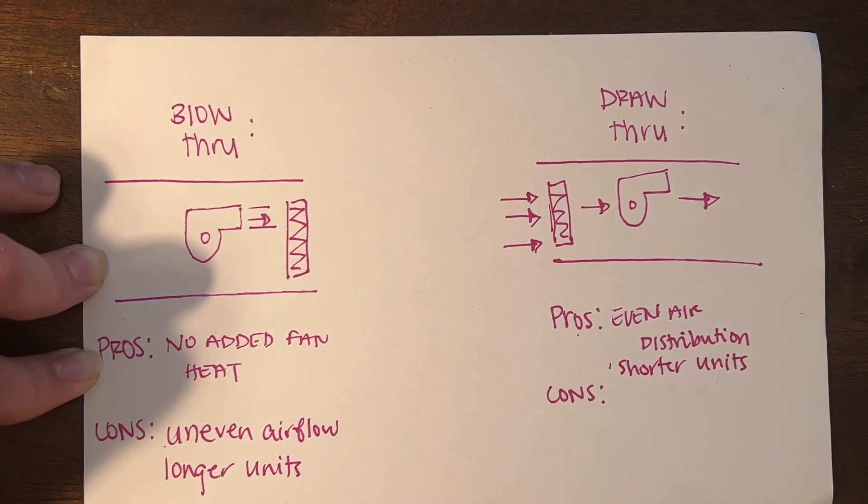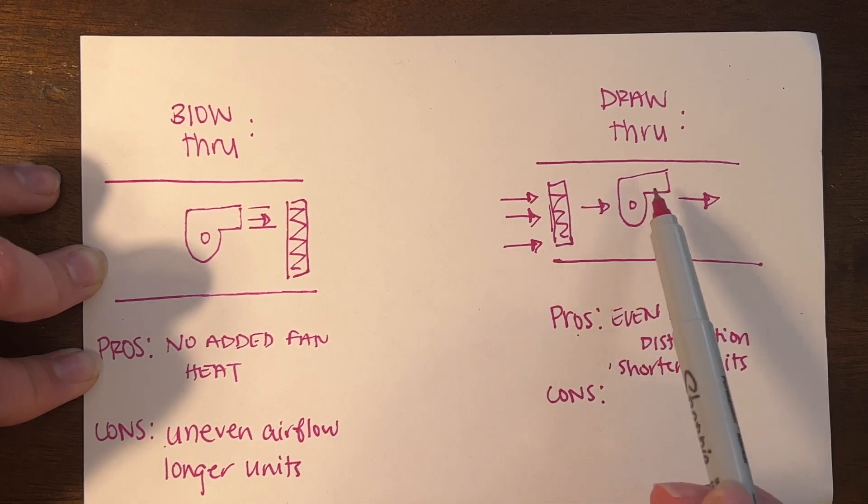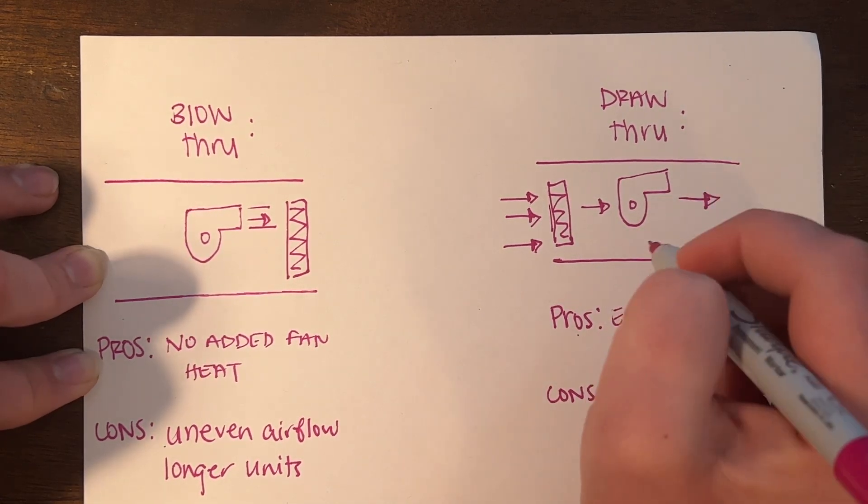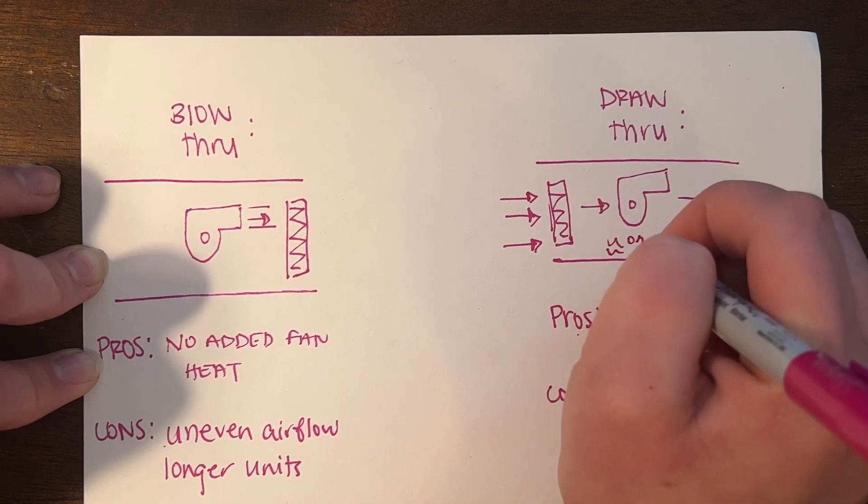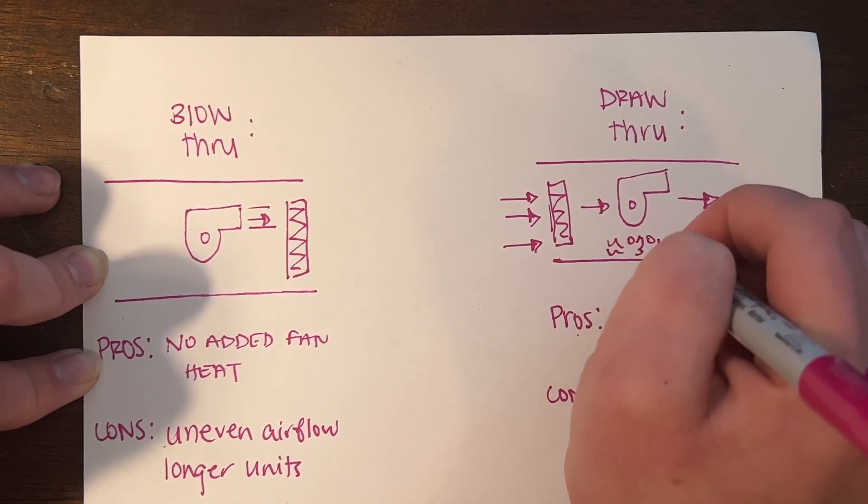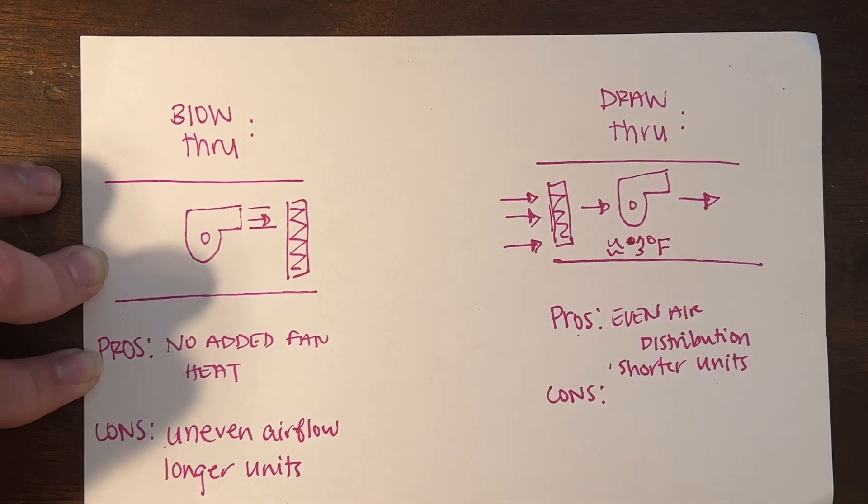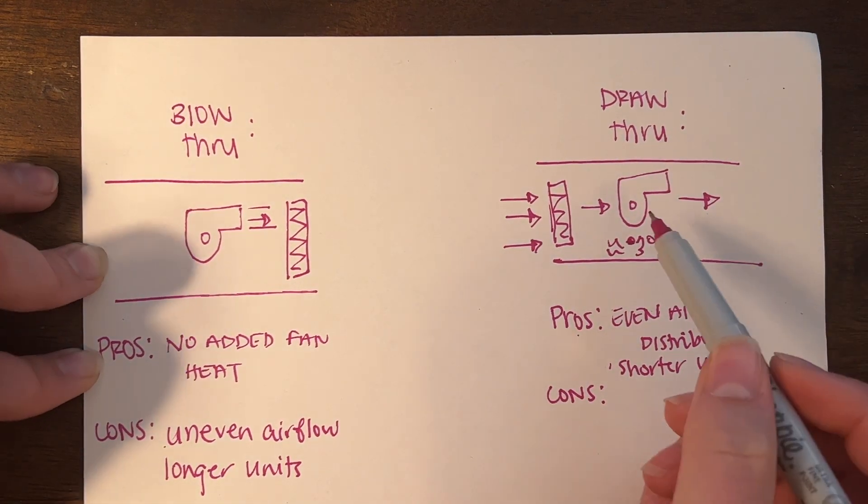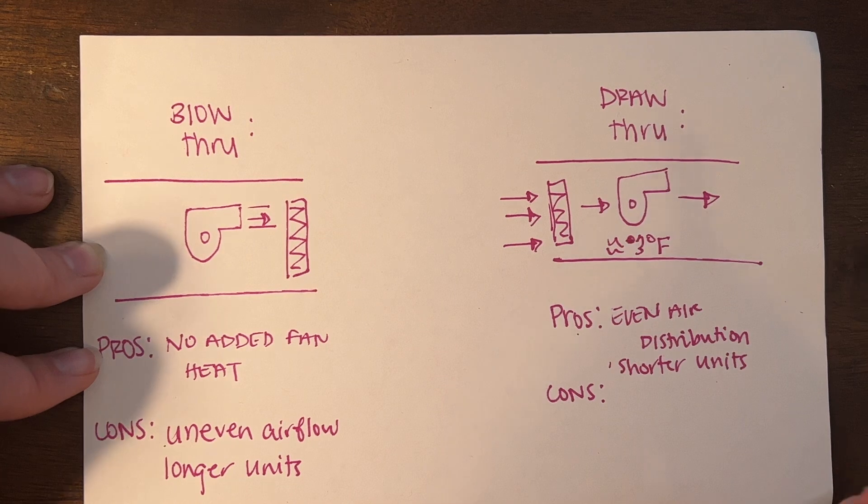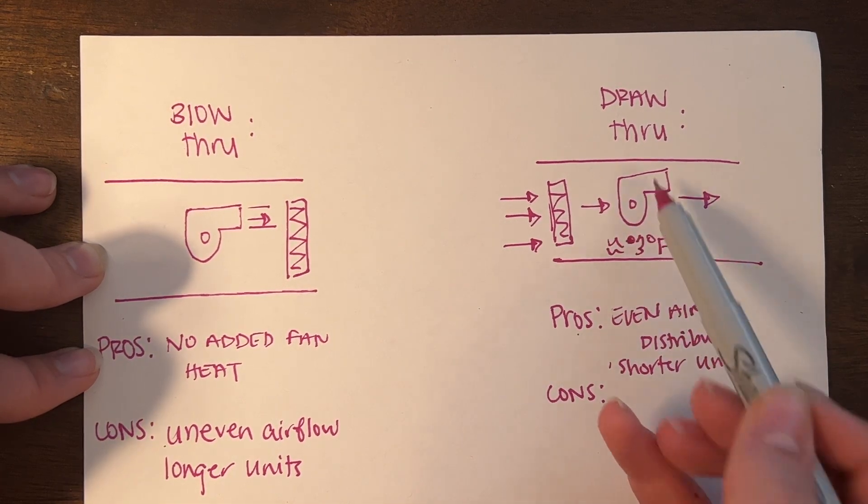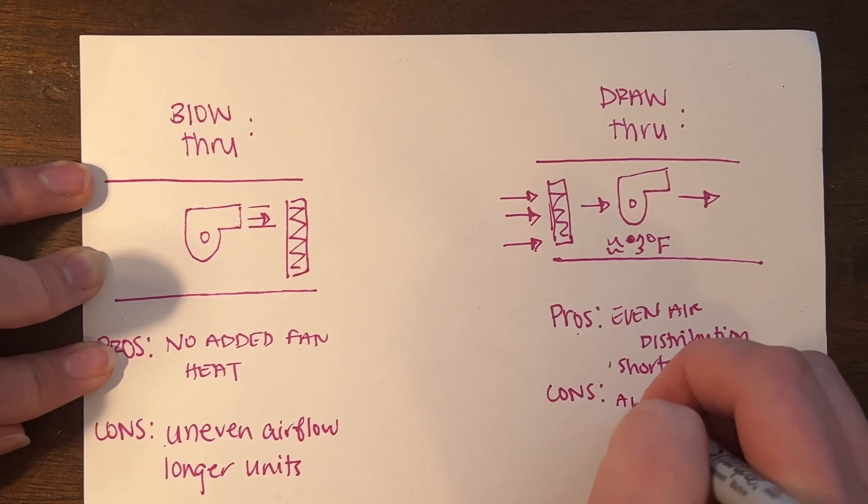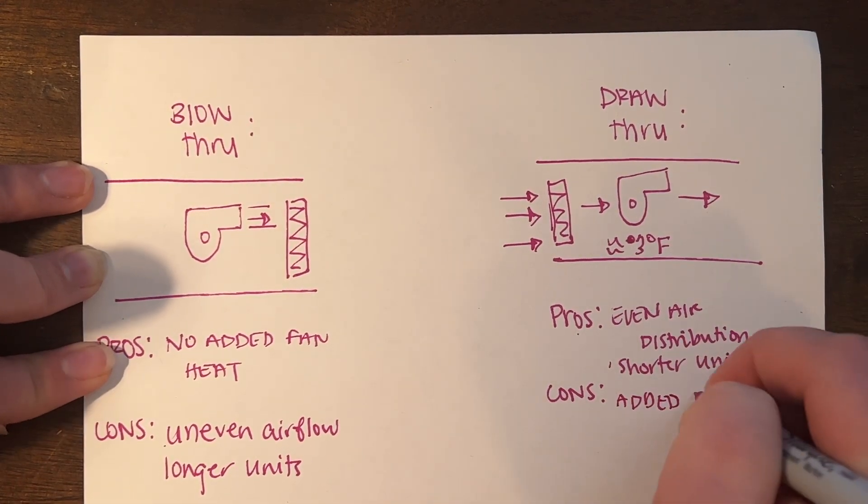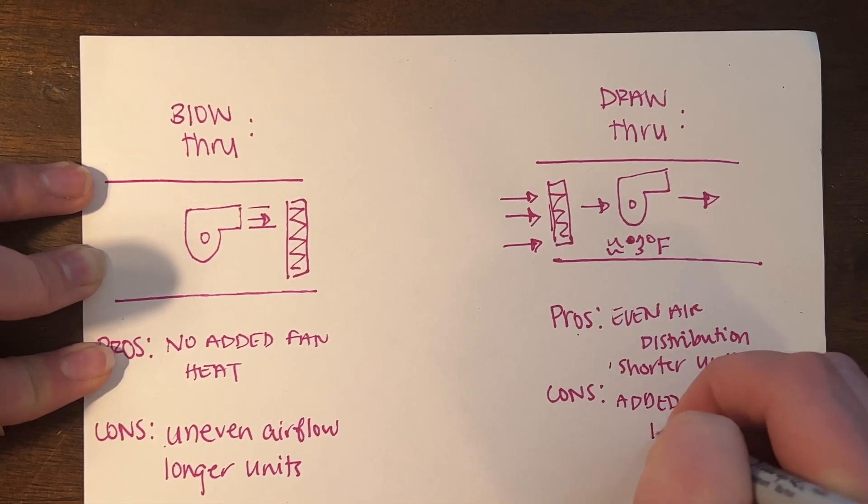However, the cons with this setup is now you have your cooled air hitting a fan, and at that fan you're going to have some added heat. We typically assume about a three-degree rise, so that is not really efficient because you're cooling the air and then you're reheating it. So the con here is your added fan heat.